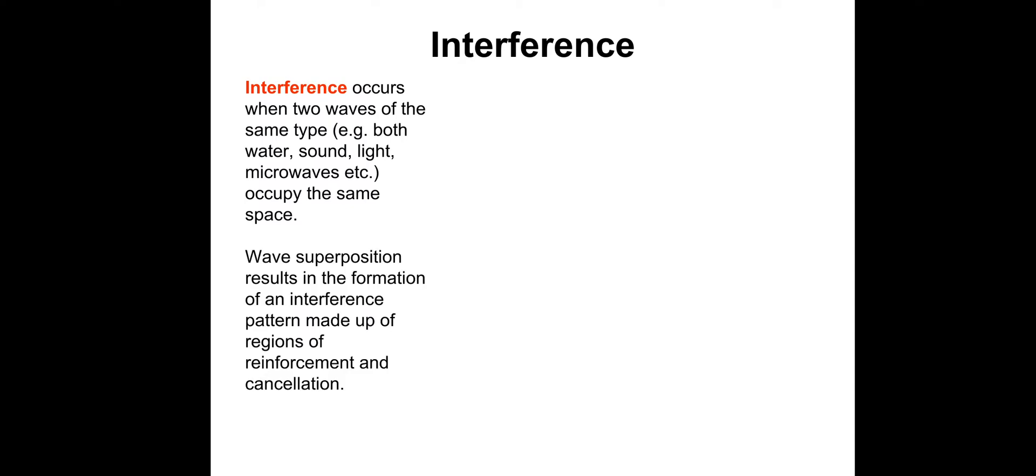Interference. Interference occurs when two waves of the same type—so that could be water, sound, light, microwaves, etc.—occupy the same space. So it occurs when two waves of the same type occupy the same space.